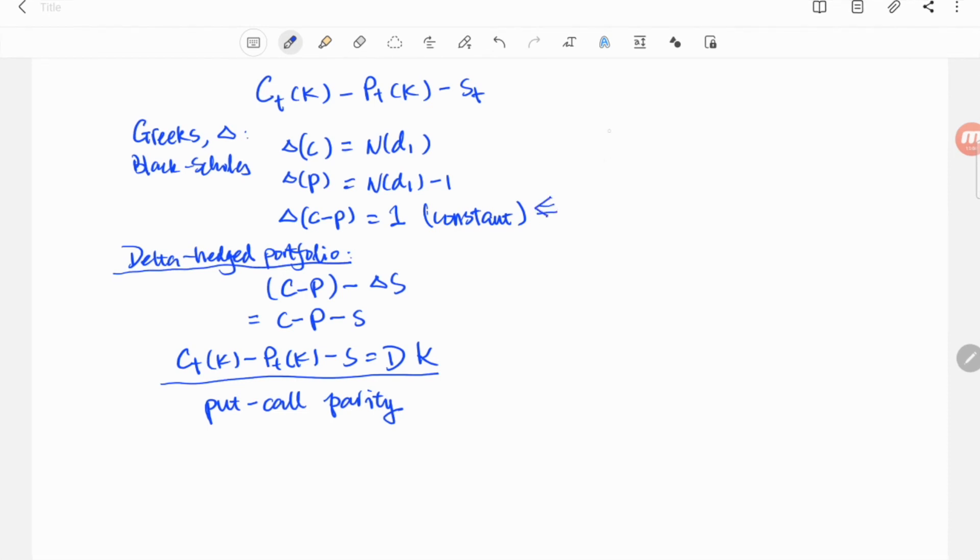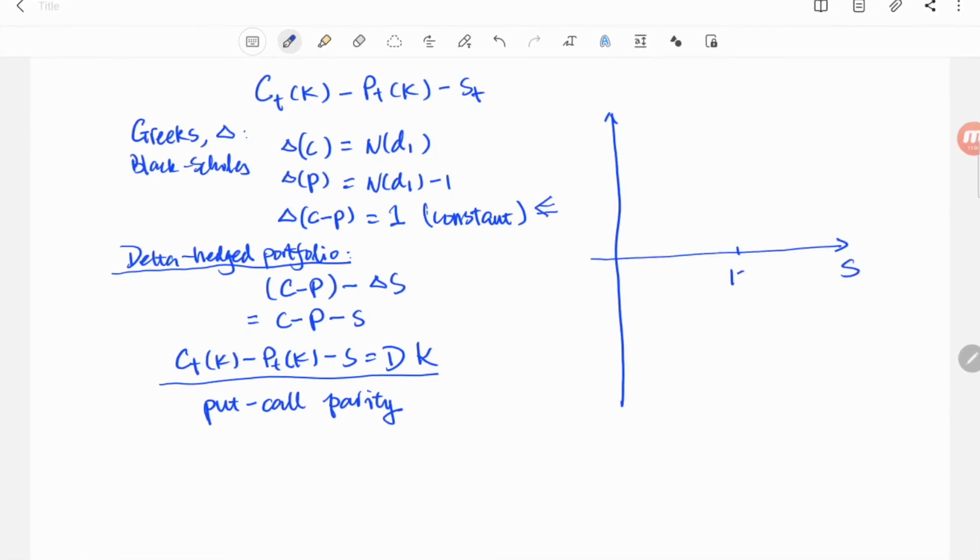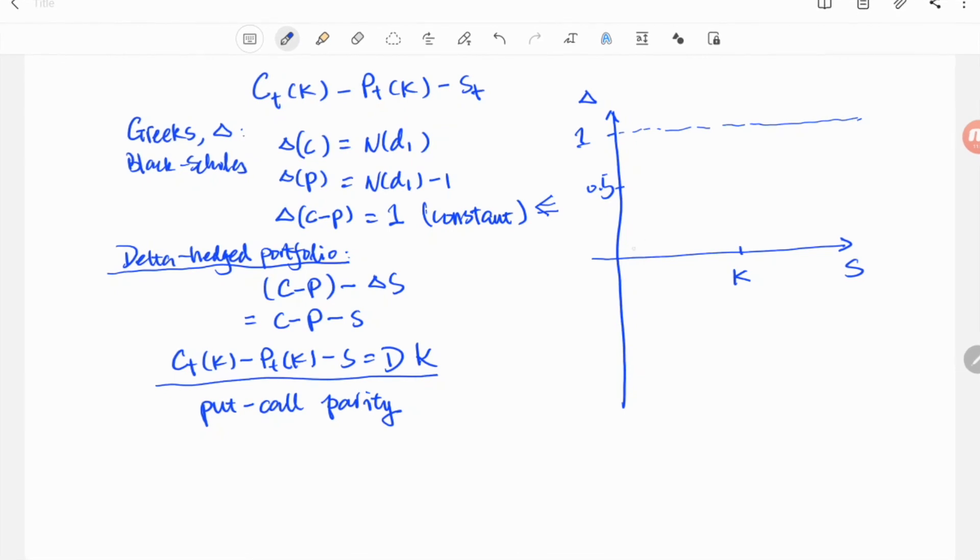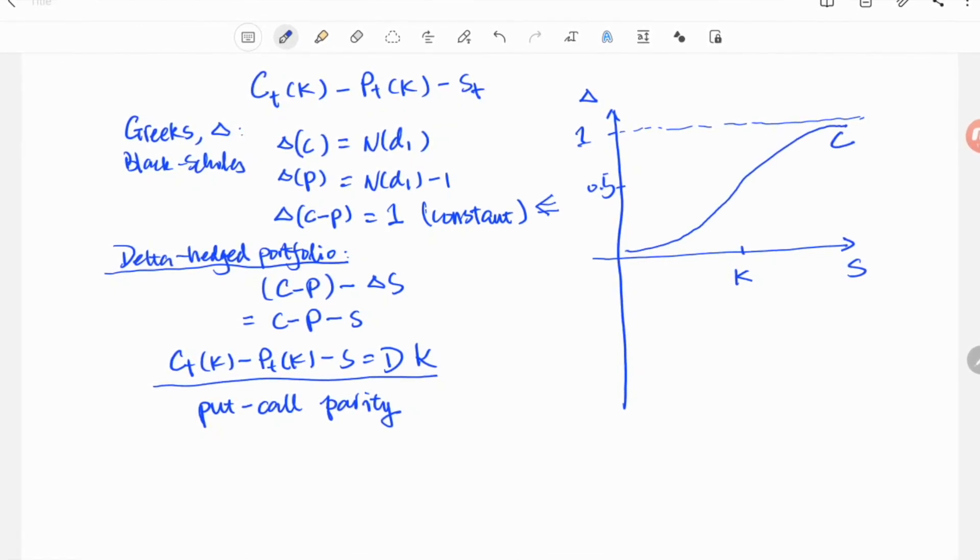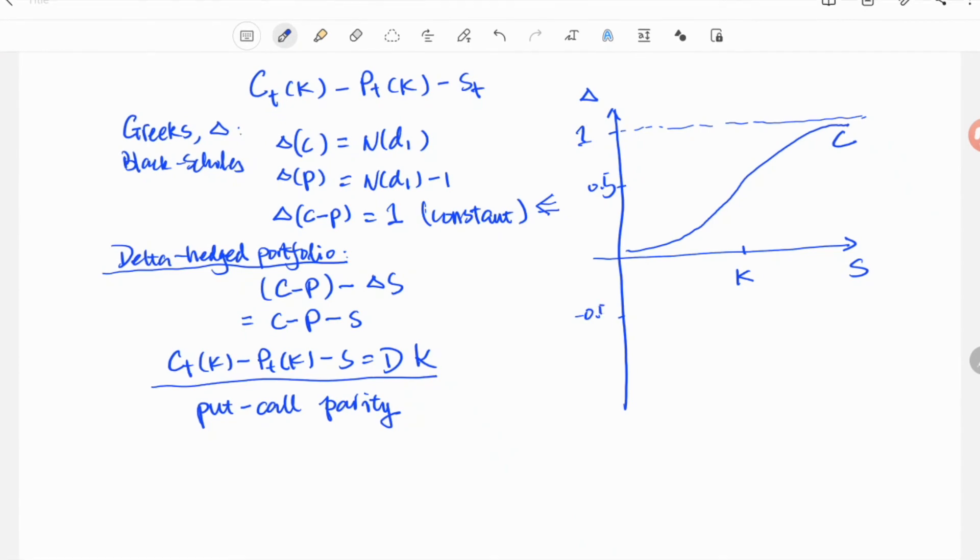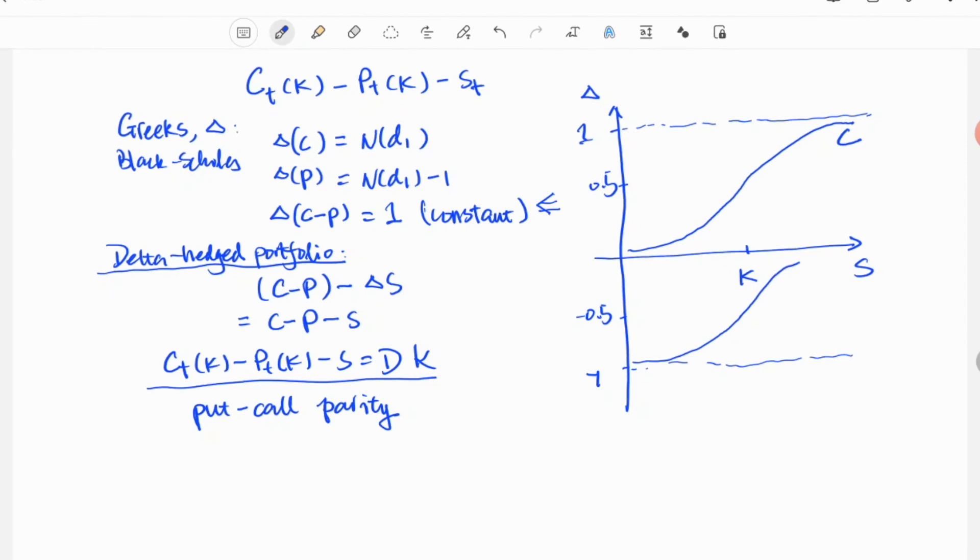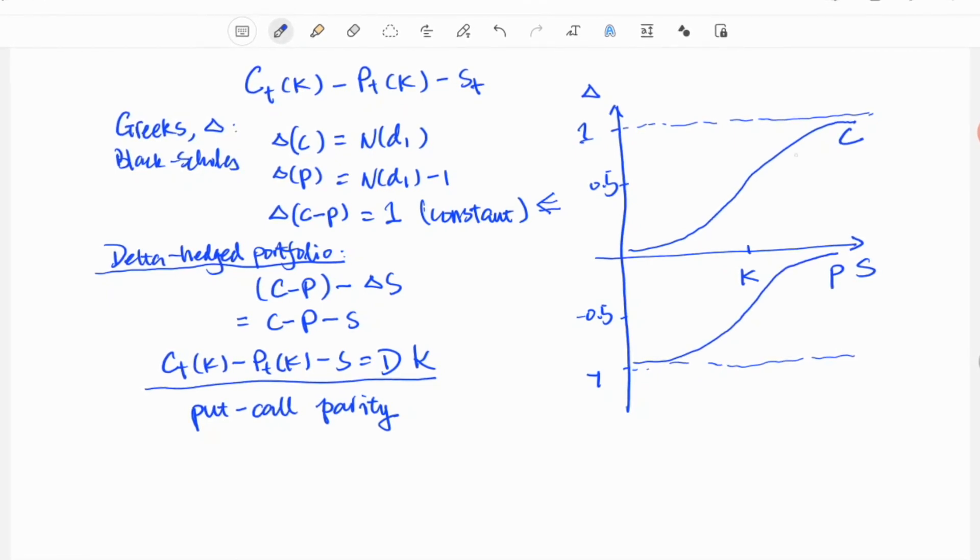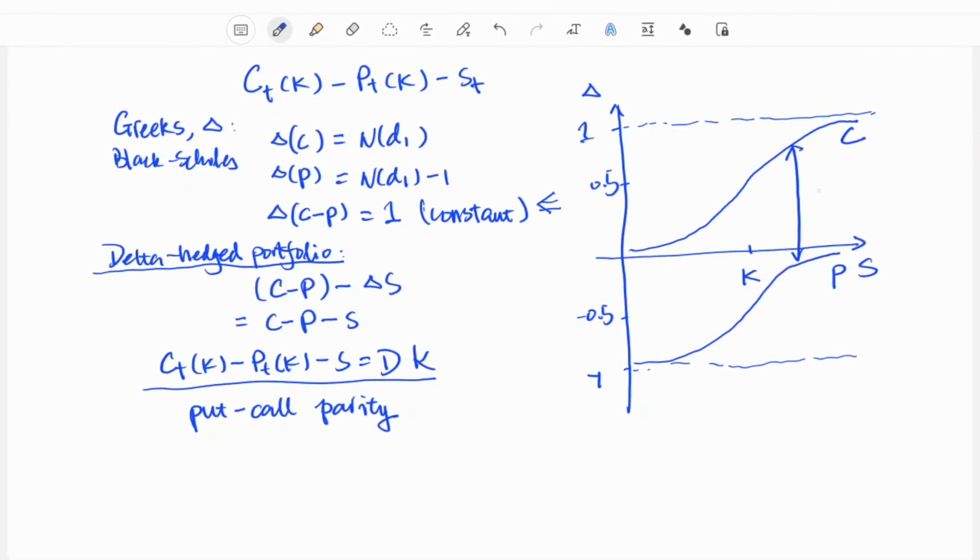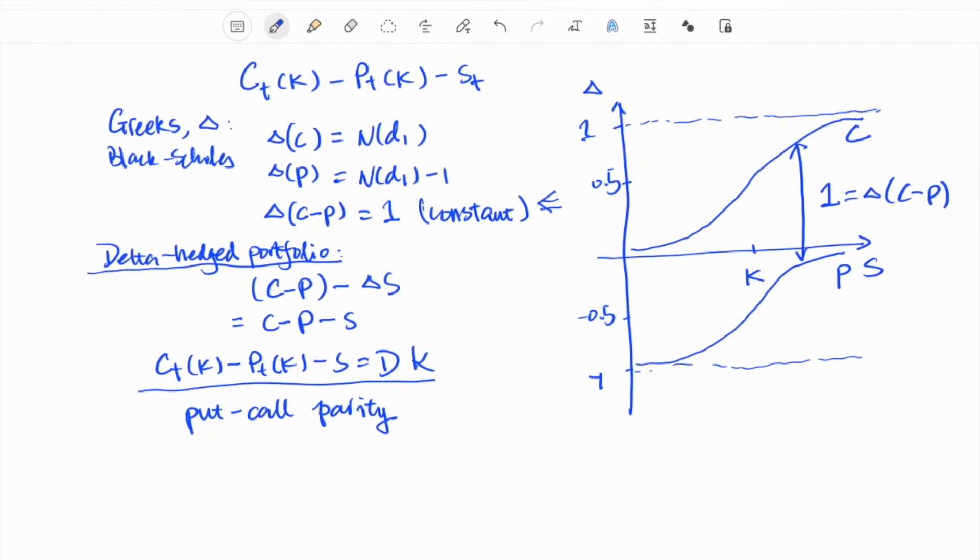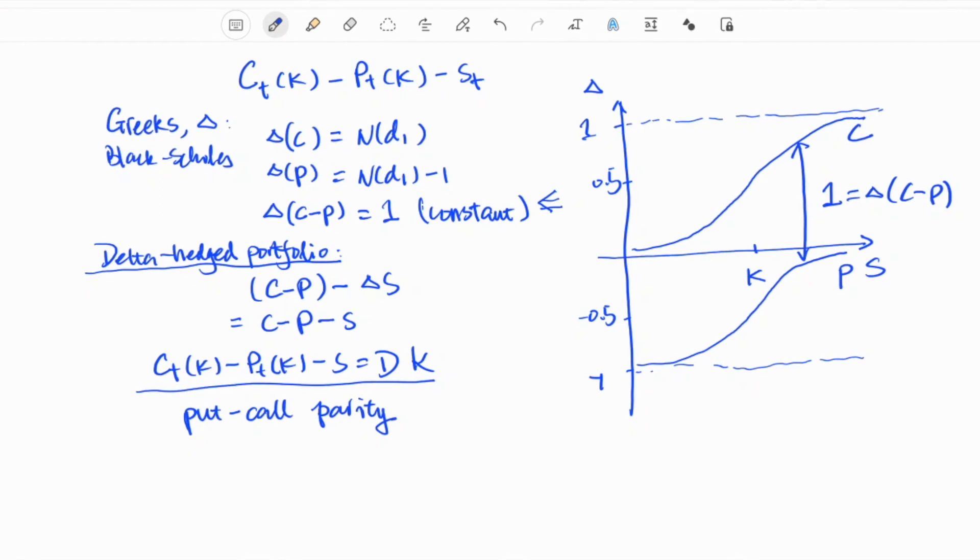Finally, to visualize the constant delta of long a call and short a put, let's plot delta as a function of the underlying price. Recall delta of a call has an S-shape between 0 and 1 and close to 0.5 at the money. How close depends on the risk-free rate and dividend. While delta of a put has the same shape but between minus 1 and 0 and close to minus 0.5 at the money. The difference between the two curves at any given S is always 1.